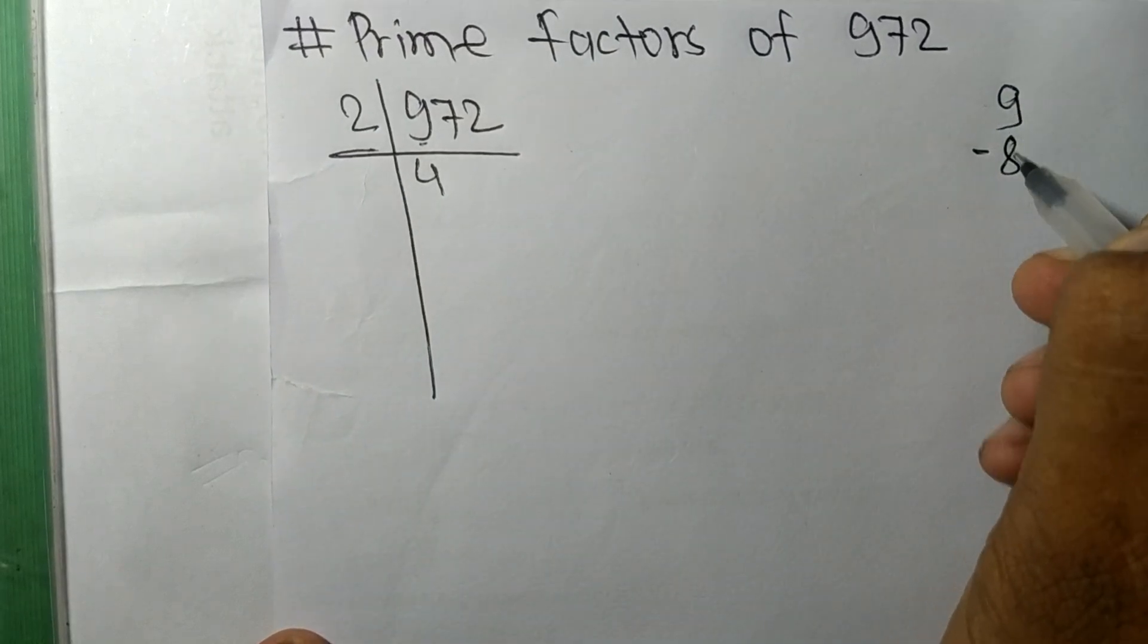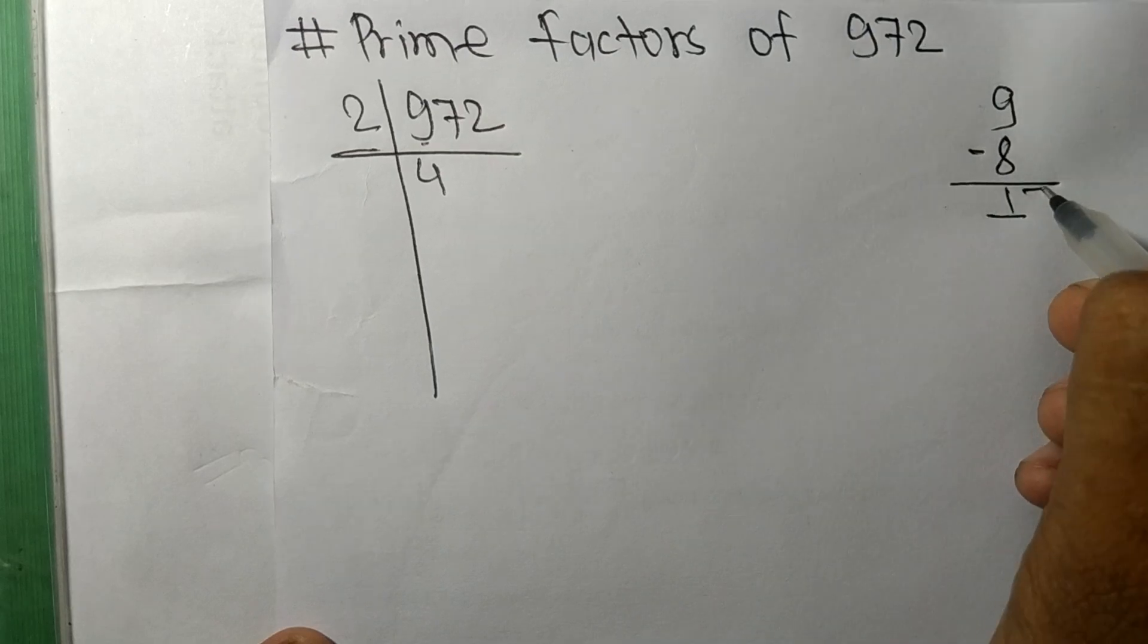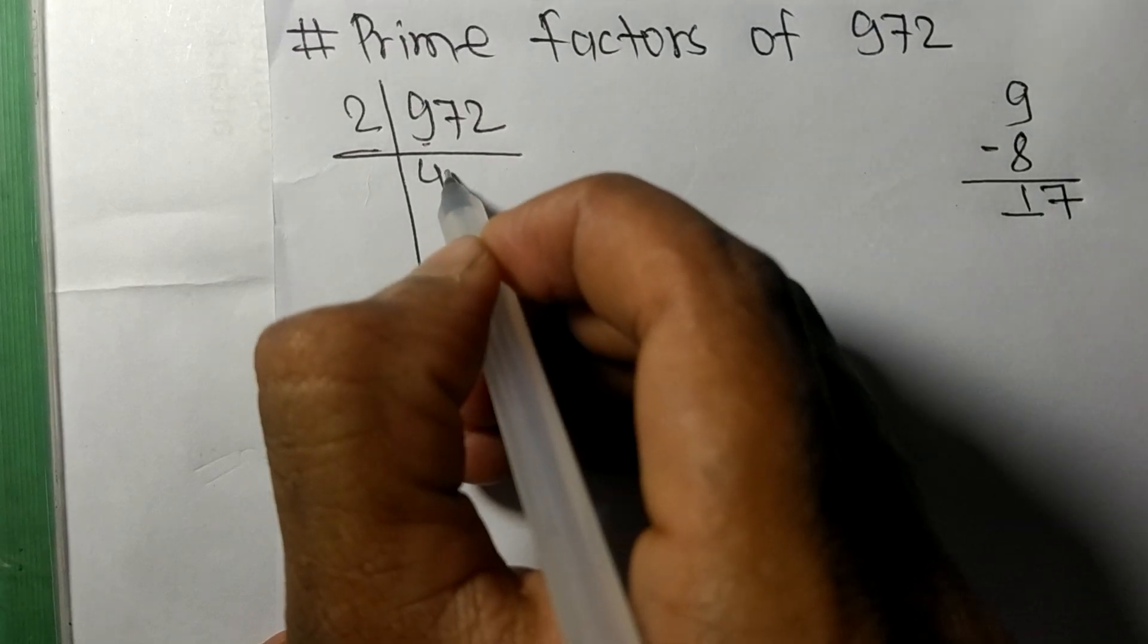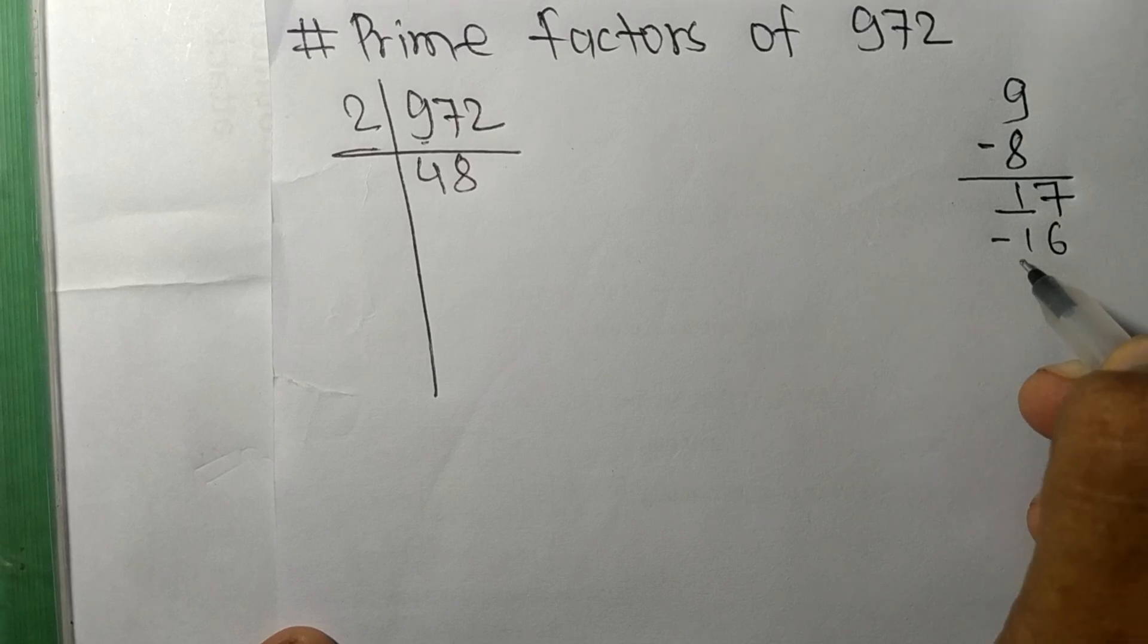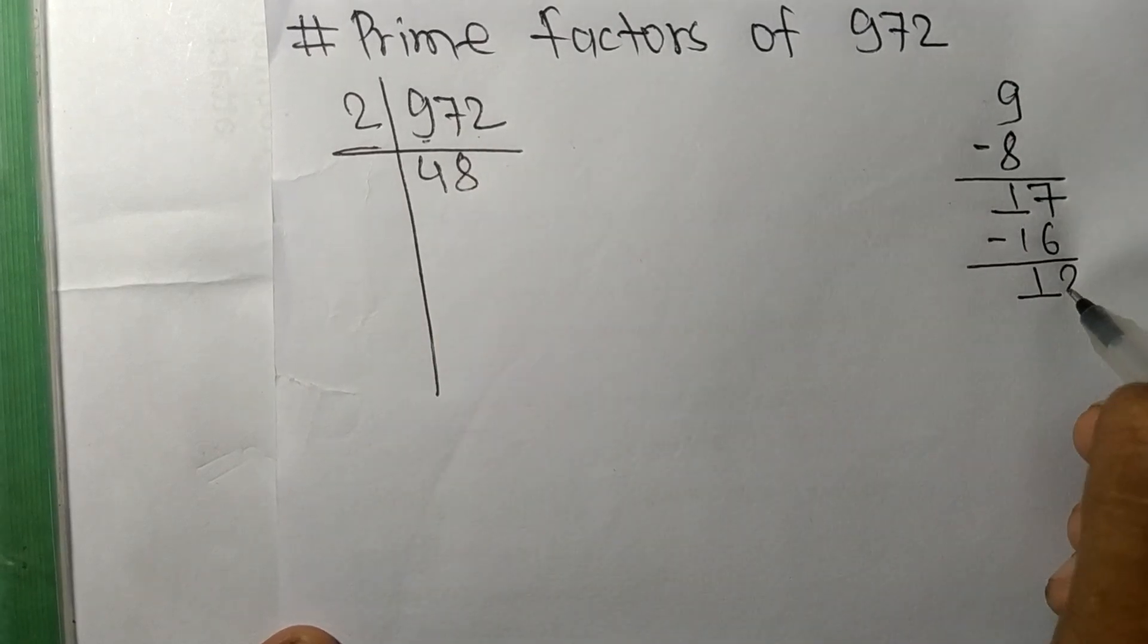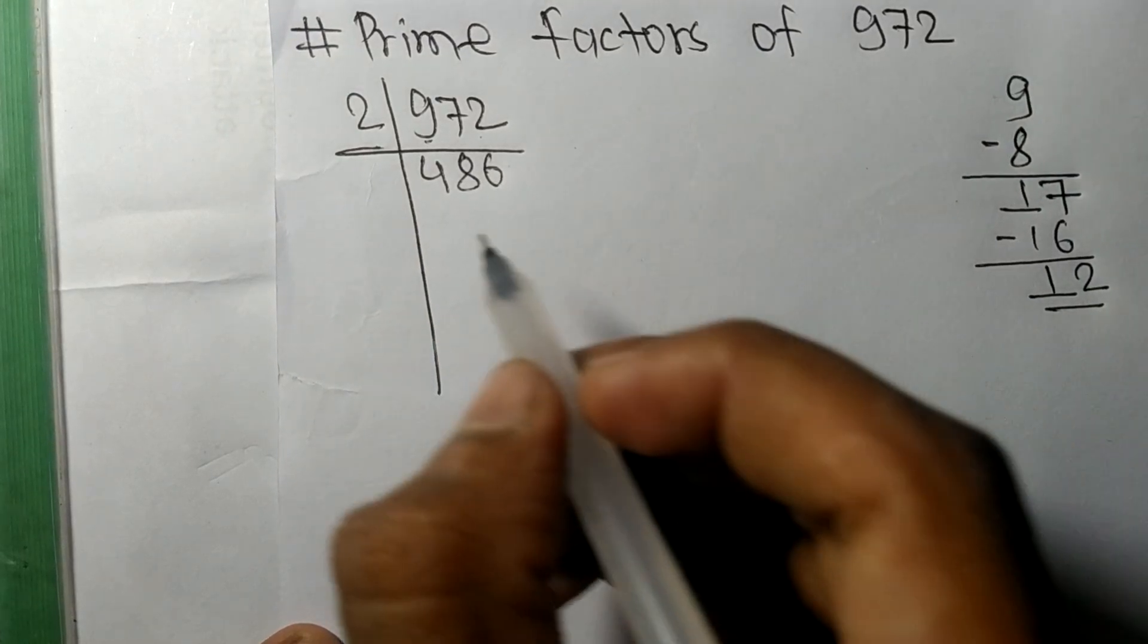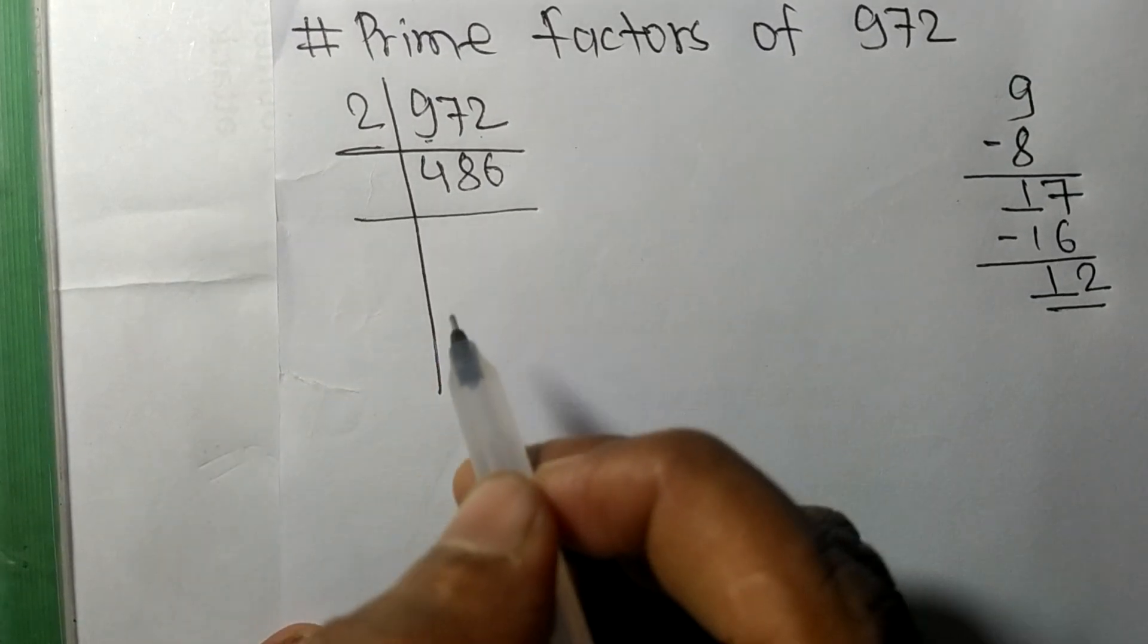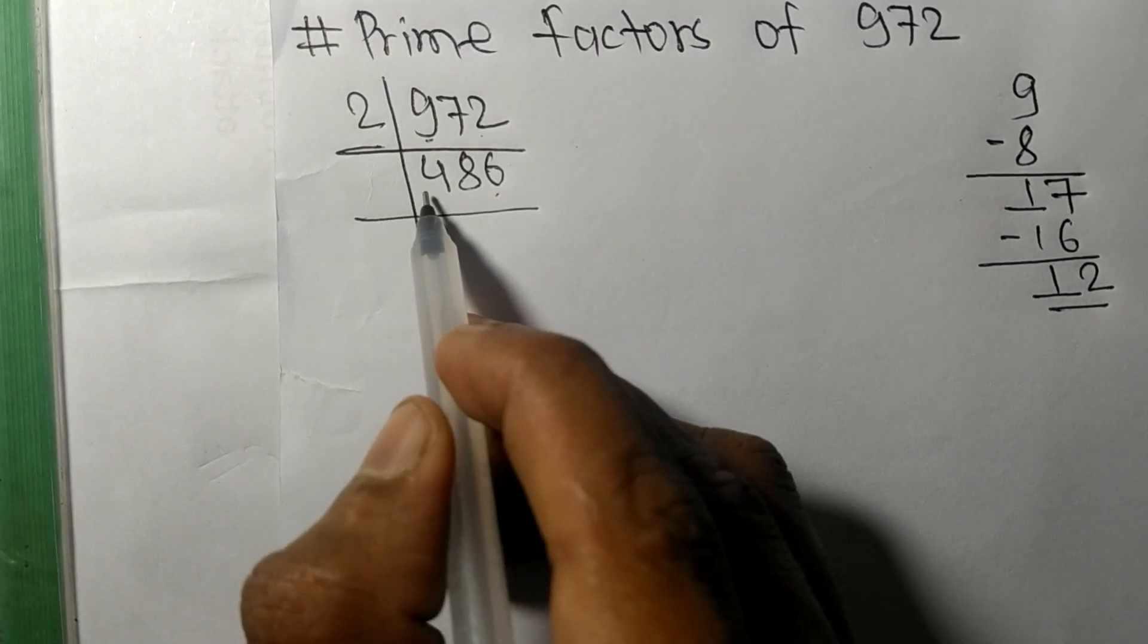On subtracting we get 1, this 7, 17. So 2 times 8 means 16, on subtracting we get 1, this 2, 12. 2 times 6 means 12.